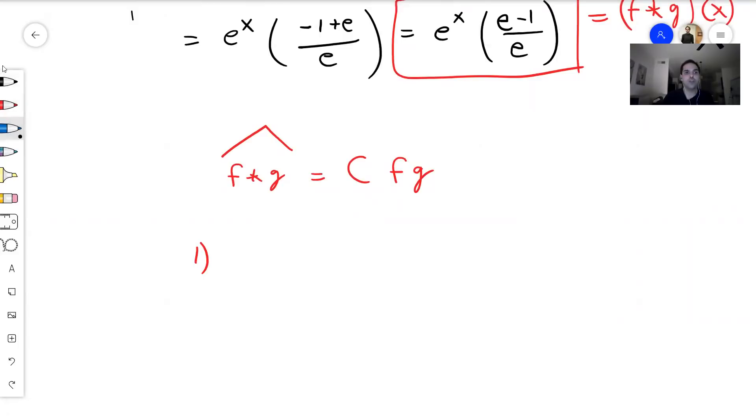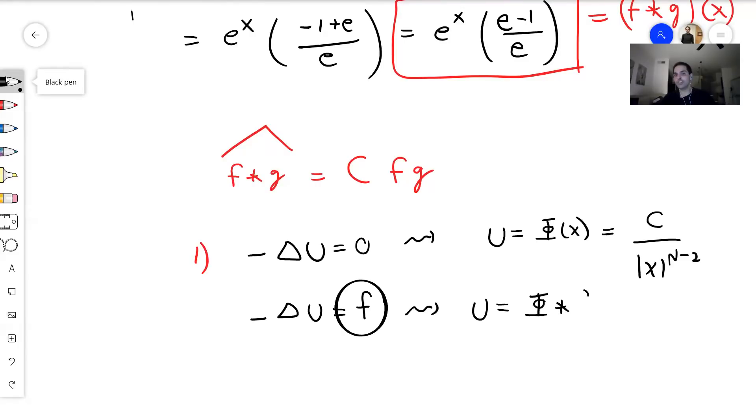But here, why I'm interested in it is because it's used in partial differential equations. For instance, if you're trying to solve Laplace's equation, minus Laplace of u equals zero, then remember one solution is given by the fundamental solution phi(x), which is some constant over |x|^(n-2) if n is bigger than 2. And the question is, how would you solve Poisson's equation, minus Laplace of u equals f? Actually very easy. You just take the fundamental solution and multiply it by f, which here is simply the convolution.